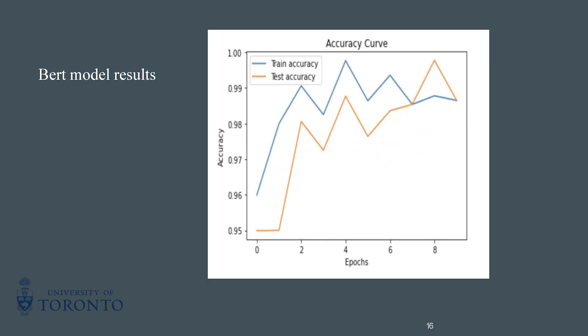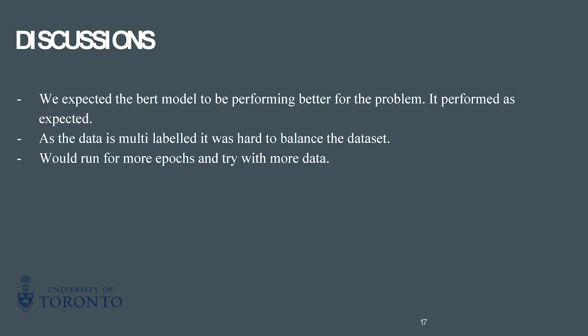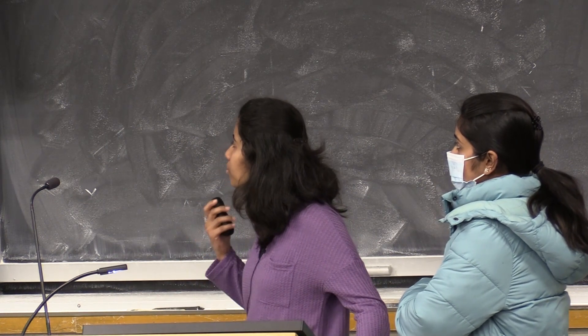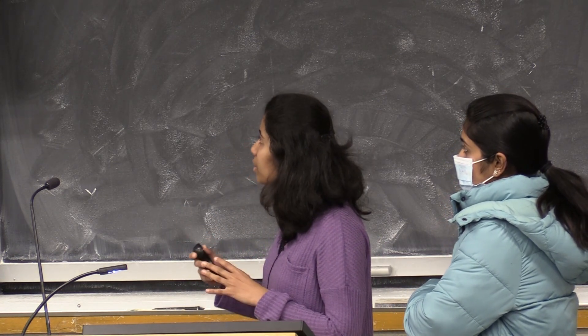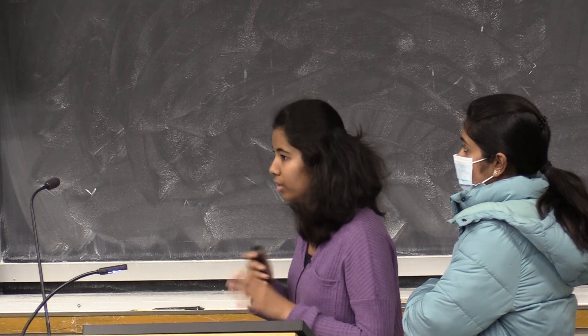We ran the BERT model for only 10 epochs, which is why the zigzag pattern in the curve. As expected, the BERT model performed better than the baseline model — the accuracy was more and the loss was less for BERT compared to the baseline. As our data was multi-labeled, it was hard to balance the dataset and get correct results. For further improvement, we are planning to train with more epochs, more data, and add more data to the labels which have fewer samples.